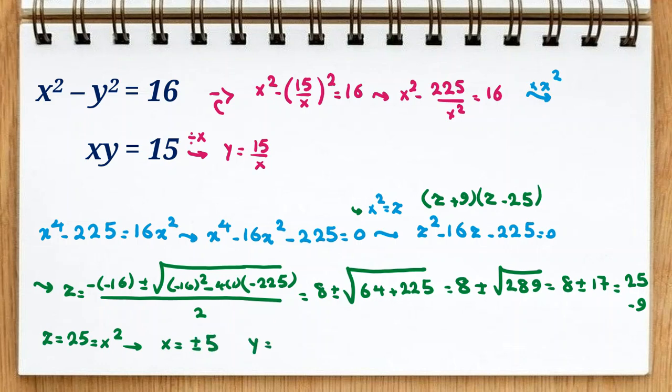And y is 15 over x, so 15 over 5 is 3, and plus minus 3. So our answers are: x, y equal to 5, 3 and negative 5, negative 3.